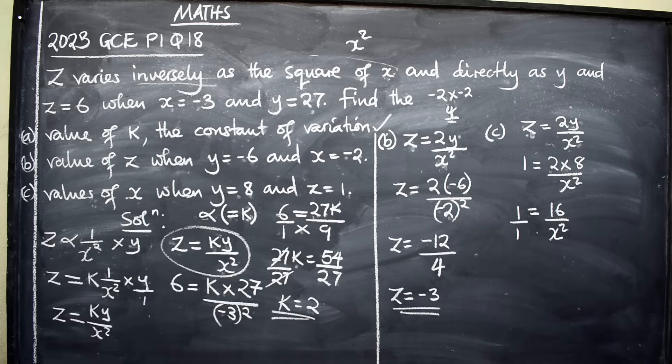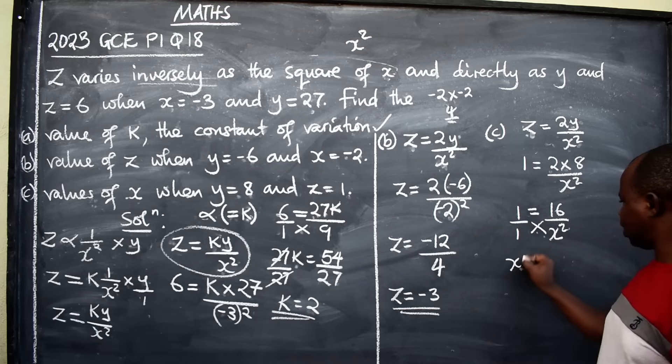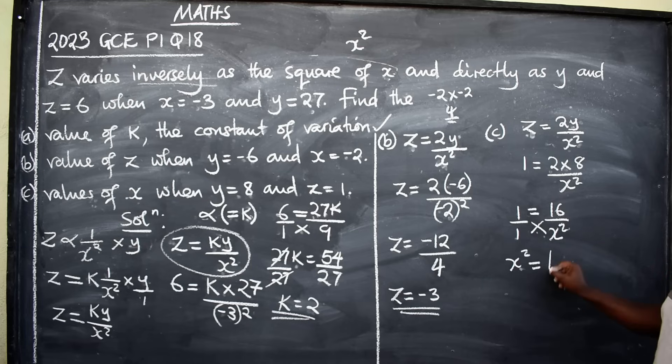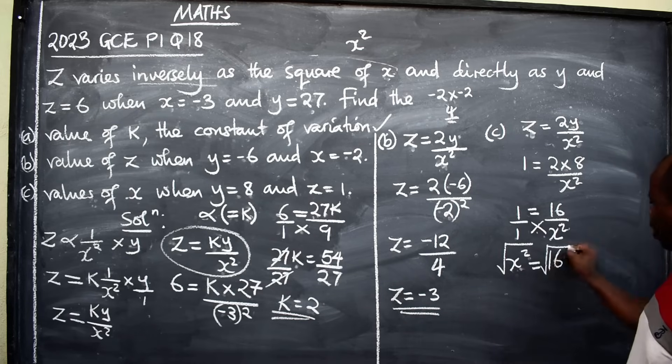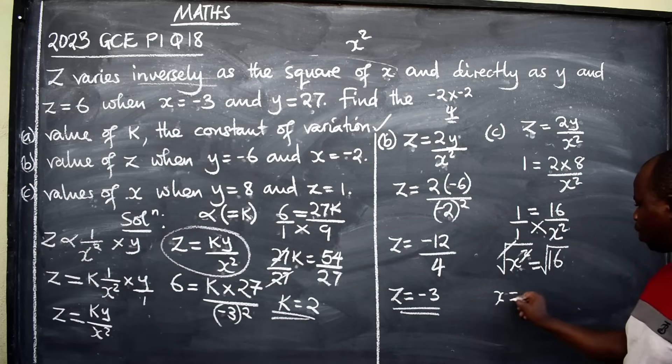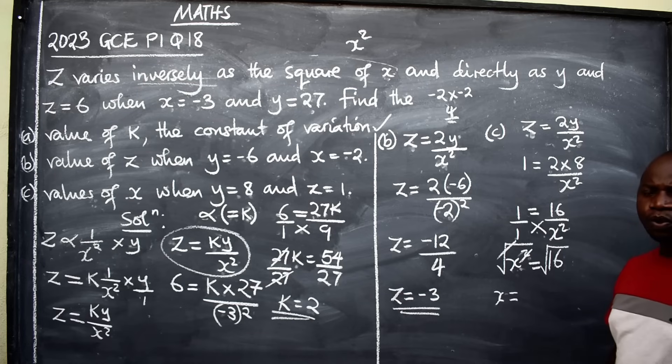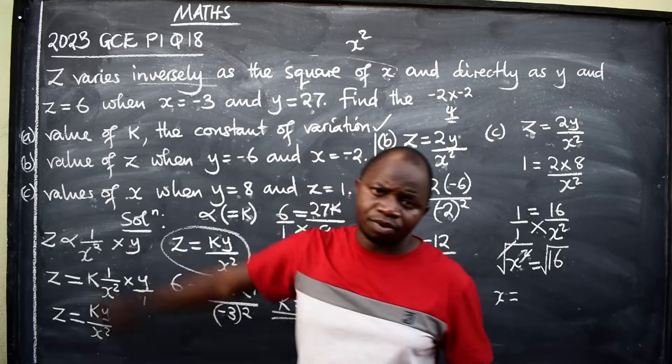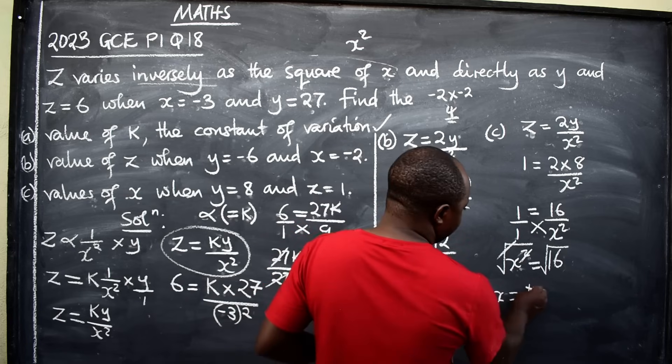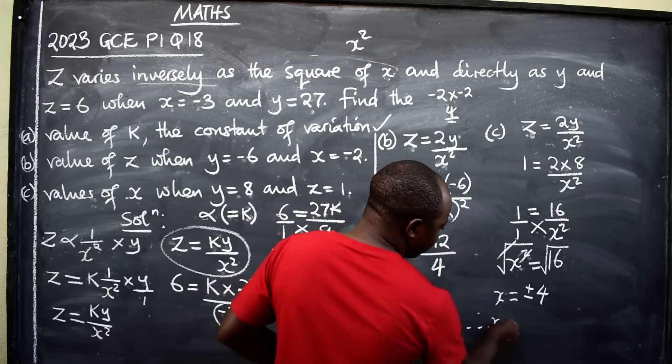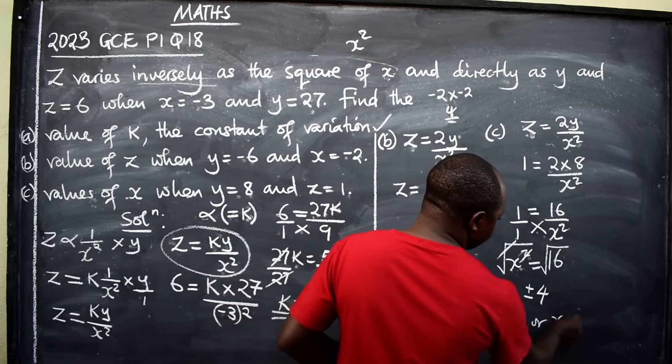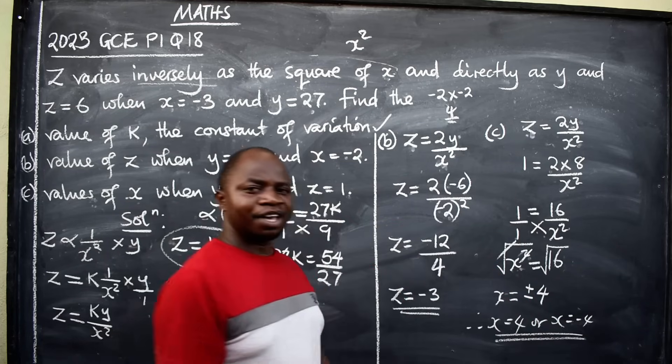Then we are going to say 1 is equal to 2 times 8 will give us 16 over x squared. Then we are going to divide by 1 cross multiply. 1 times x squared, this will give us x squared equals 1 times 16, 16. To find the value of x when we have a square here, you introduce a square root on both sides. So square root here, square root here. Cancel this. X will be equal to square root of 16 will produce two answers. Values will produce two answers. And these two answers will be positive or negative 4. Therefore, x is equal to 4 or x is equal to negative 4. These are the values.